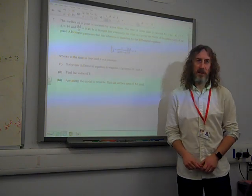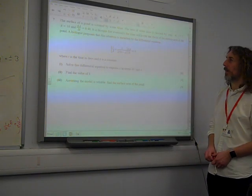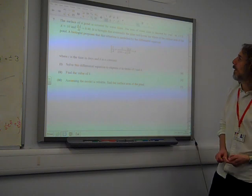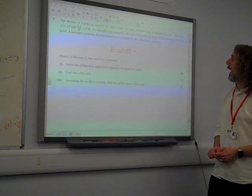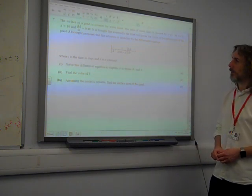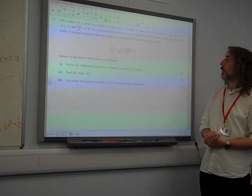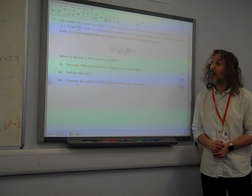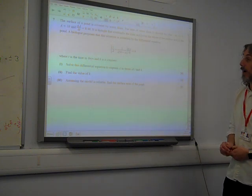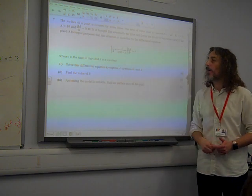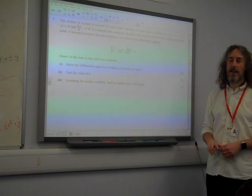Question 7. The surface of a pond is covered by water lilies. Beautiful. The area of water lilies is denoted by a meter squared at t equals 0, a is 10, da/dt is 0.48. It's thought that eventually the lilies will cover the whole surface area of the pond. A biologist proposes that this situation is modeled by this differential equation, where t is the time of day and k is a constant.